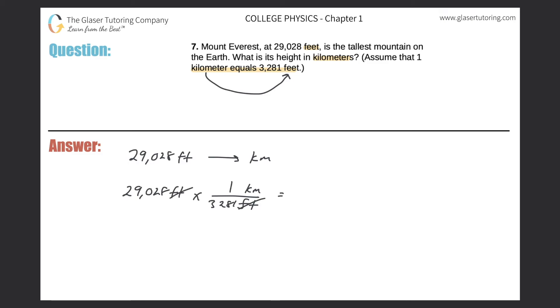The feet cancel. Now all I need to do is take out my handy dandy calculator. So 29,028 feet divided by 3,281. I'm going to round slightly, so it's going to be 8.85 kilometers.